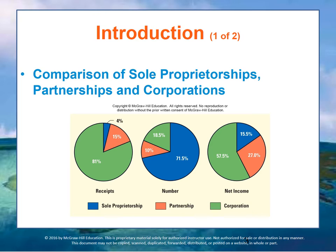Proprietorships far outnumber corporations, but they net far fewer sales and far less income. There are many more of them, but they tend to be smaller. A proprietorship is owned by one individual — a company owned by one individual.